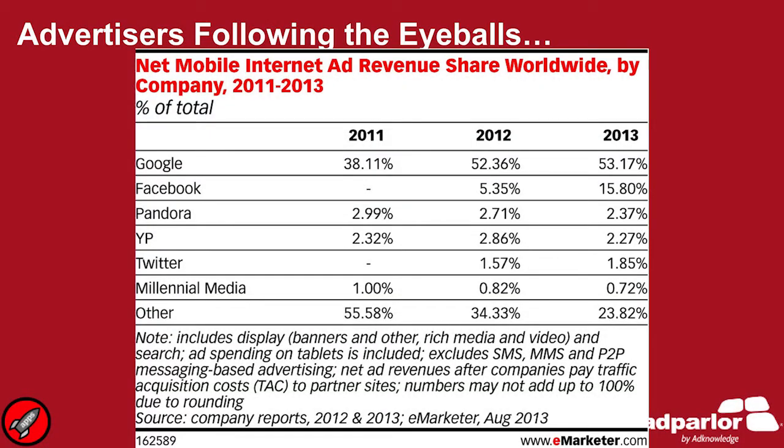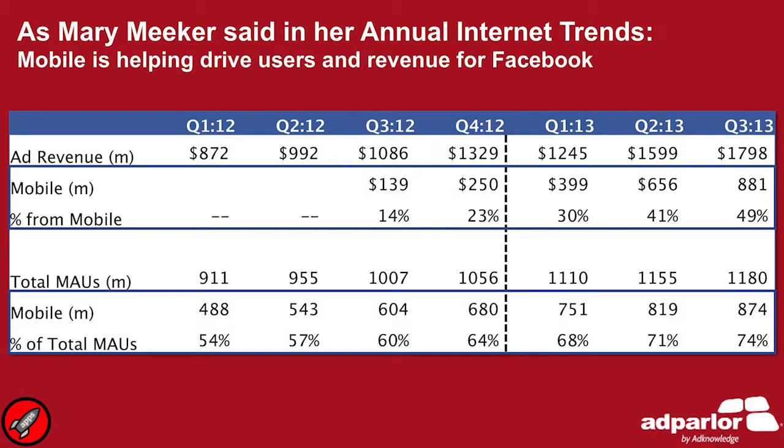So what does that mean for advertisers? If you think about the frame of mind that people are in, you can think about the kind of ads you would post. I remember when I was still in Australia, a lot of people were telling me this Facebook thing is never going to take off, they're never going to make any money. And now look at these figures — within a year, almost 16% of the mobile online advertising revenue globally is already coming through Facebook. As Mary Meeker stated in her annual Internet Trends Report, mobile is helping to drive users and revenue for Facebook quite strongly, and now almost 50% of the advertising revenue of Facebook is going through mobile.